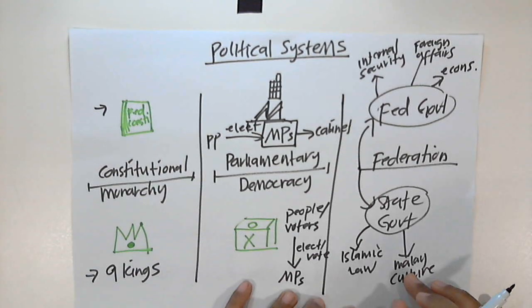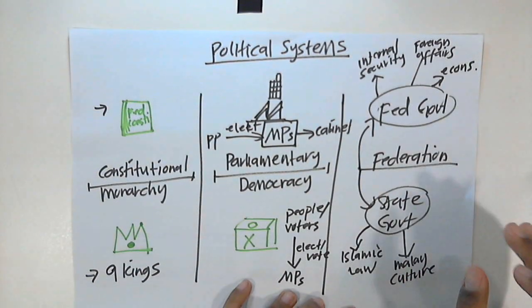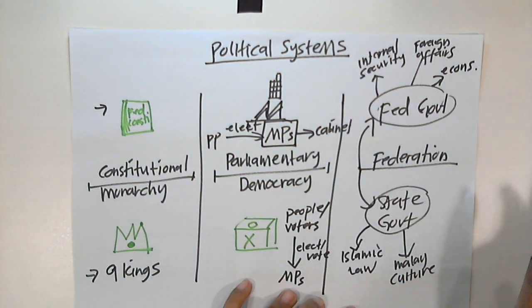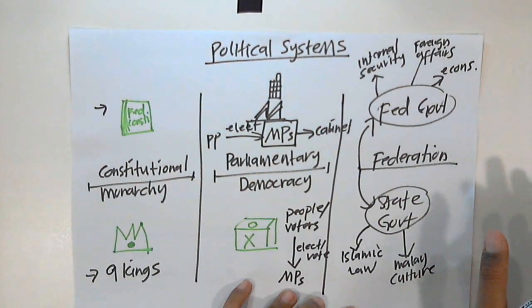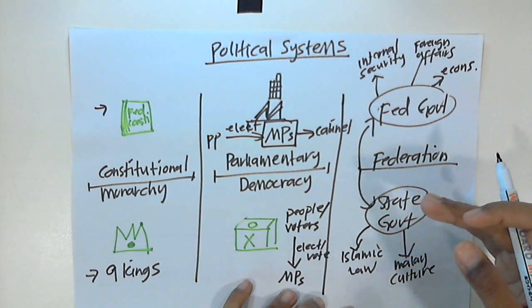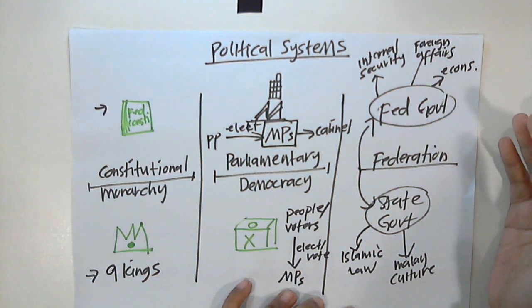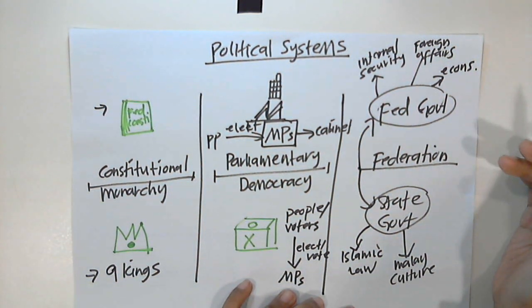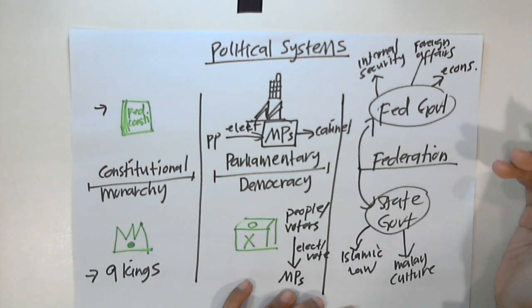However, there are certain areas where the federal government and state government can cooperate together. This area we call the concurrent list, or common list.